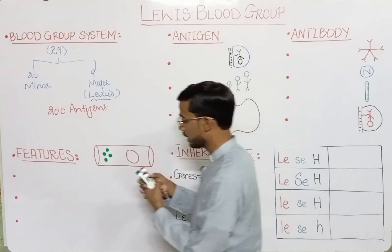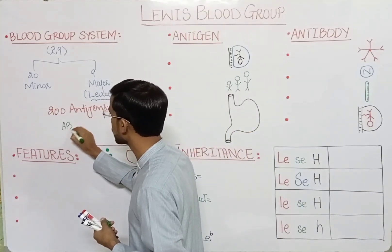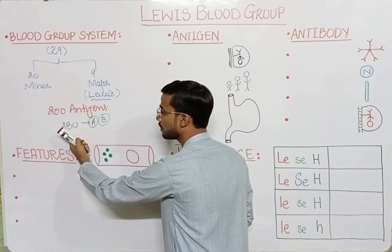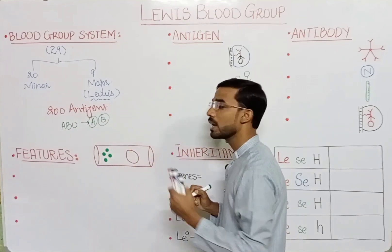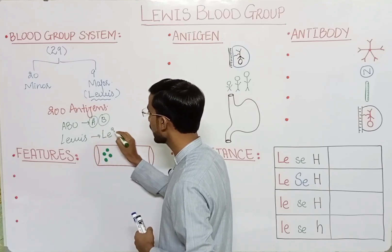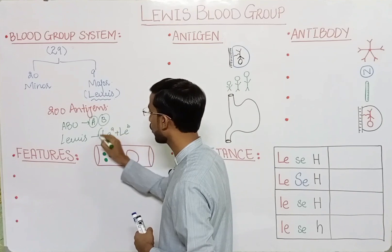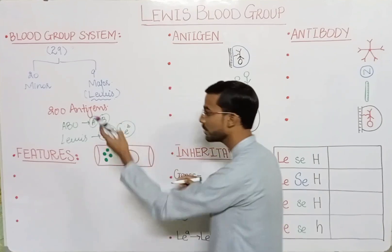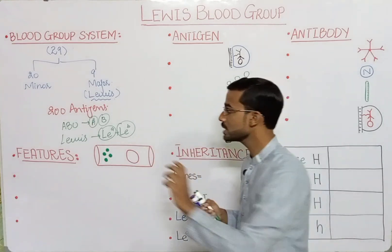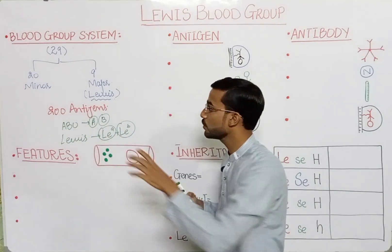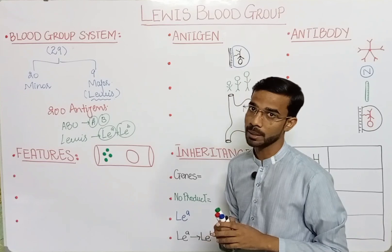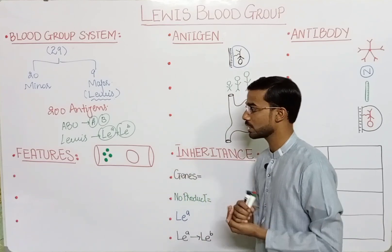For example, the ABO blood group system has A antigen and B antigen — one blood group system containing two antigens. Similarly, the Lewis blood group system also contains two antigens: LEa and LEb. So there are 29 blood group systems but 200 antigens in total. This is the basic overview.